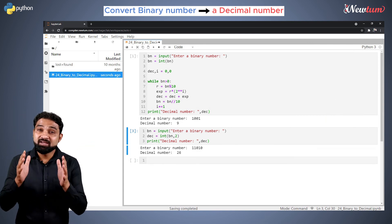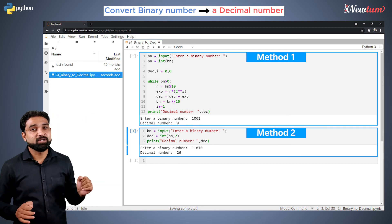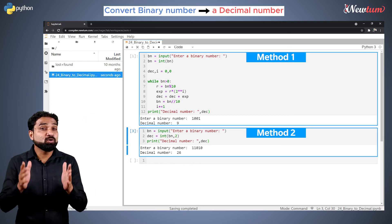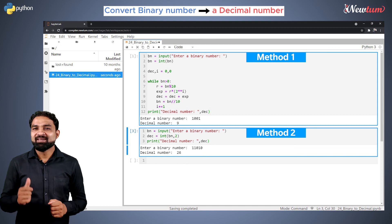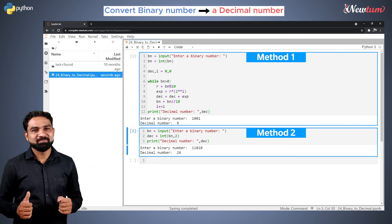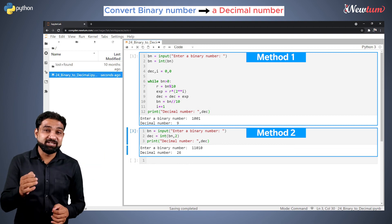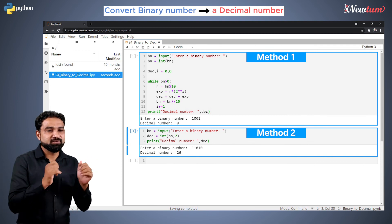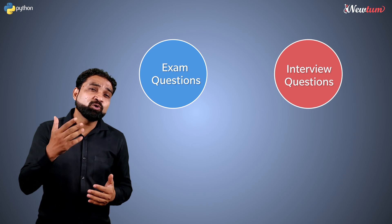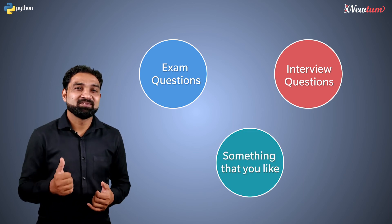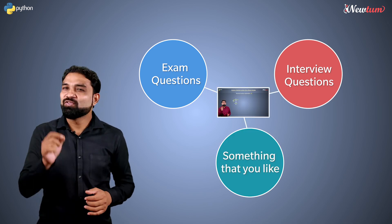Listen, here both the methods are important. As a developer, you should know the core logic as well as the shortcut provided by advanced programming languages. In our case, it's Python. Hope you got some insight into binary to decimal conversion. If you want any sort of example to be covered, please put that in the comment box. It could be an exam question, an interview question, or something that you like. We will create a video for you on that topic.